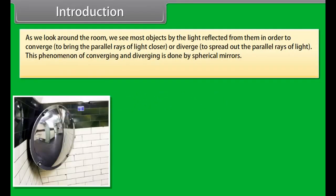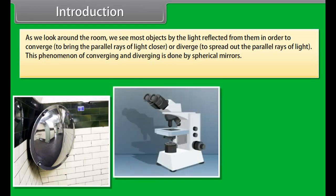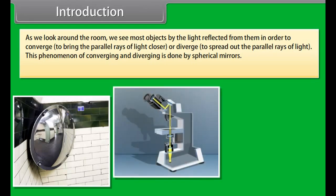As we look around the room, we see most objects by the light reflected from them. In order to converge — to bring the parallel rays of light closer — or diverge — to spread out the parallel rays of light. This phenomenon of converging and diverging is done by spherical mirrors. The mirrors having curve-like surfaces are known as curved mirrors.